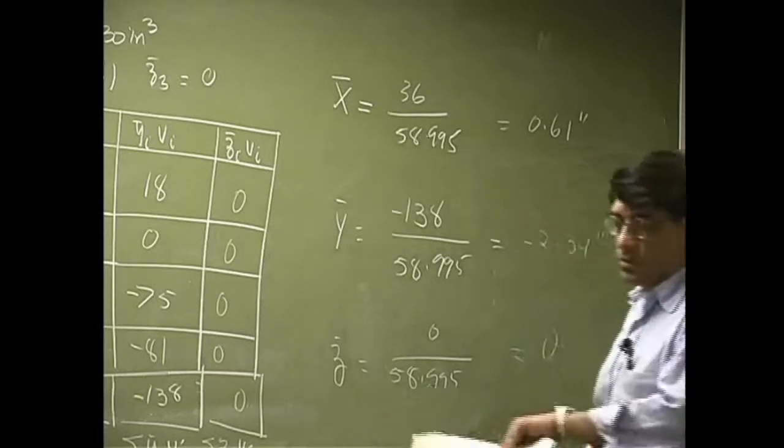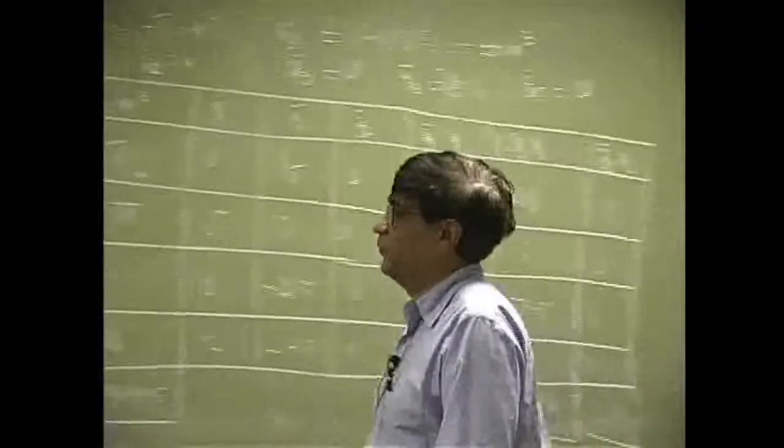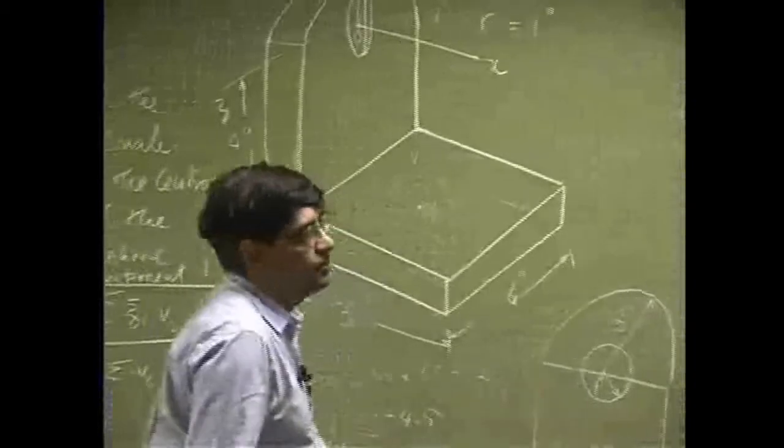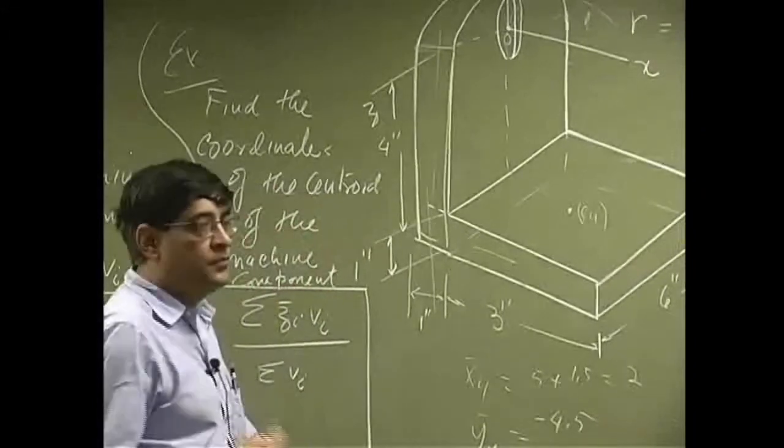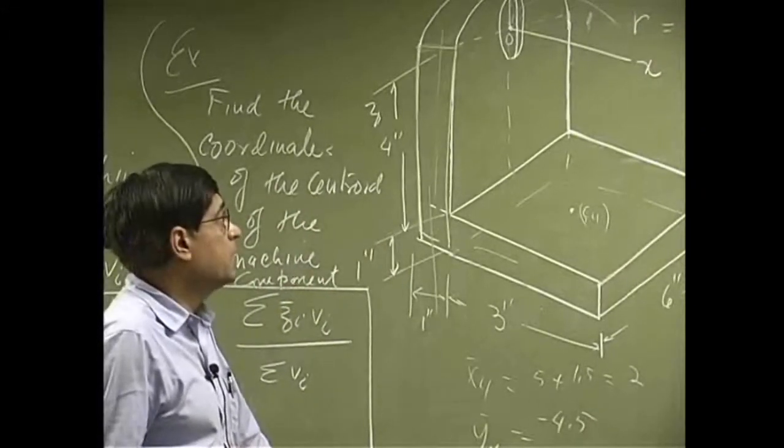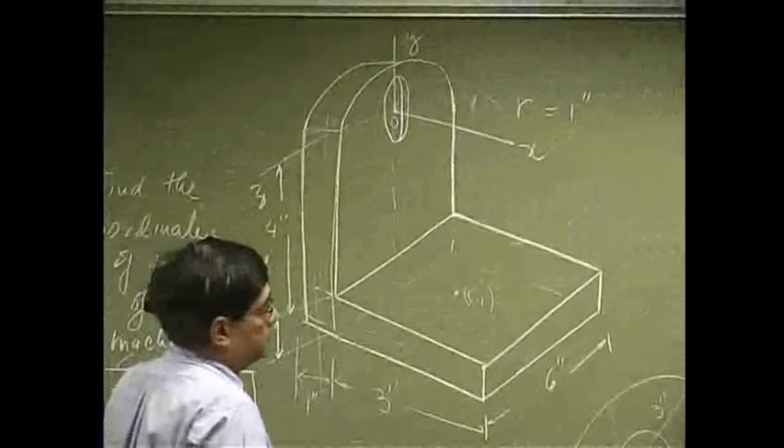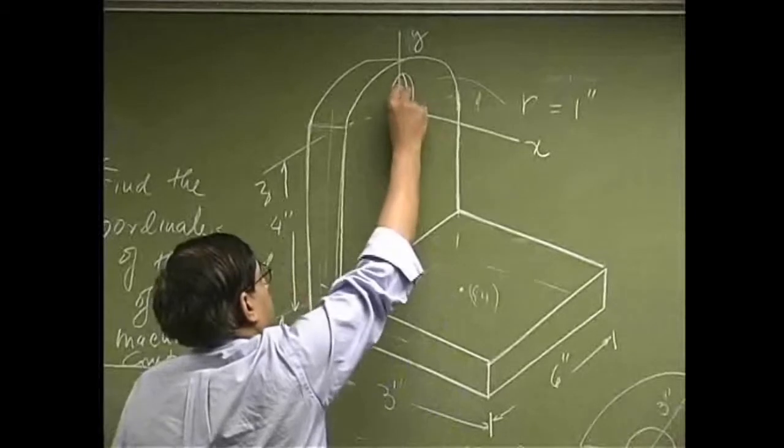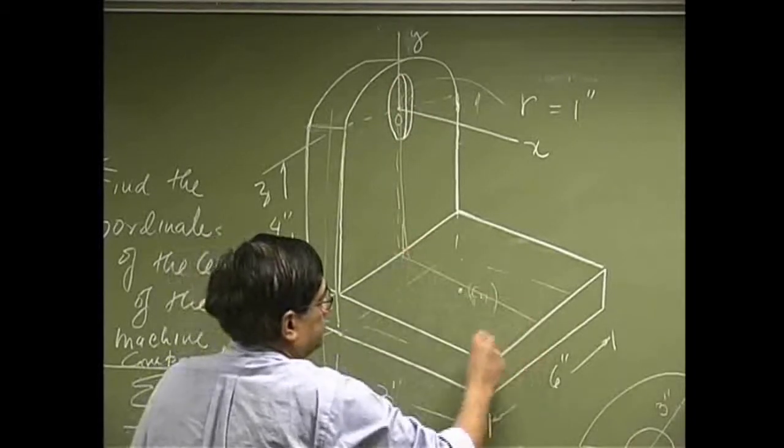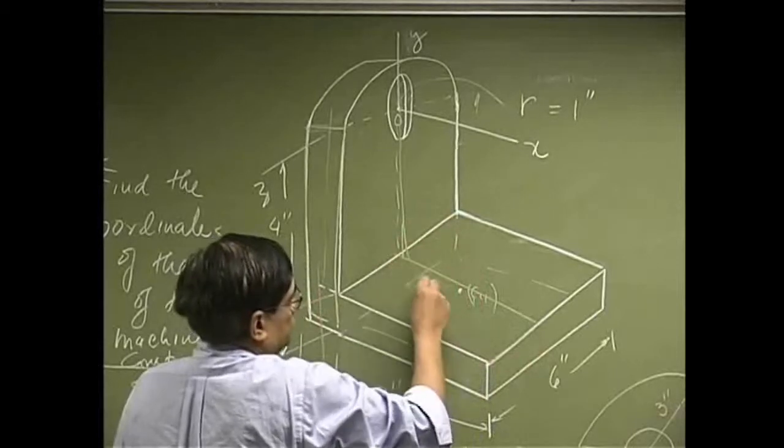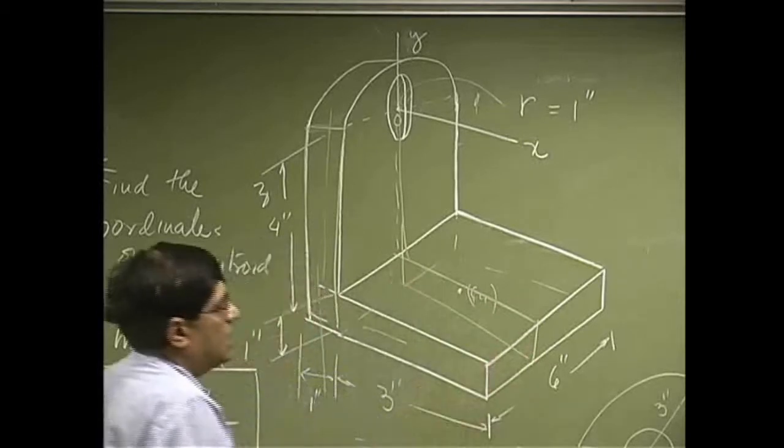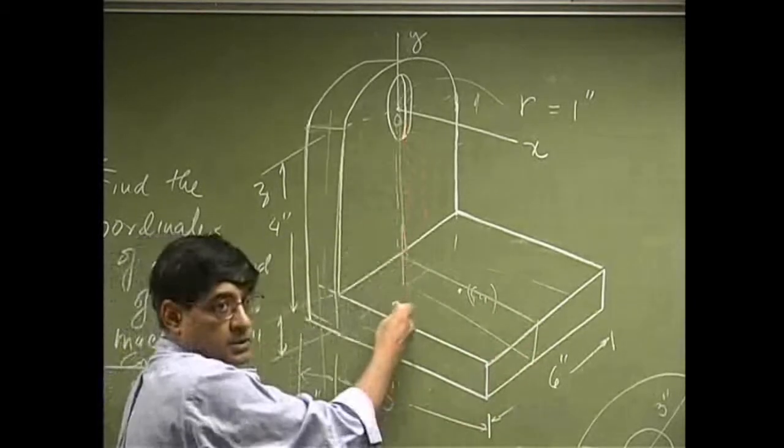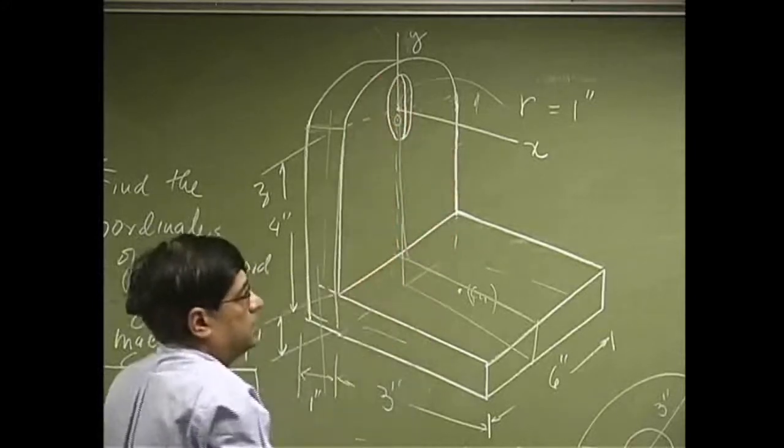So that gives you the XYZ coordinates for the centroid. Now you notice that the last coordinate was 0, and everything for every volume, the Z coordinate came out to be 0. Now this could have been known beforehand if you look at this plane.